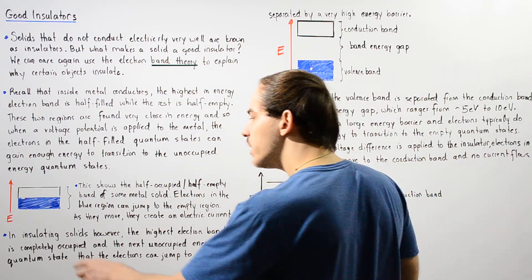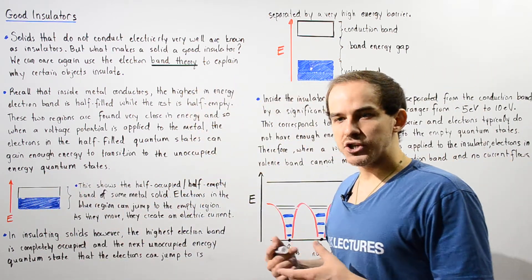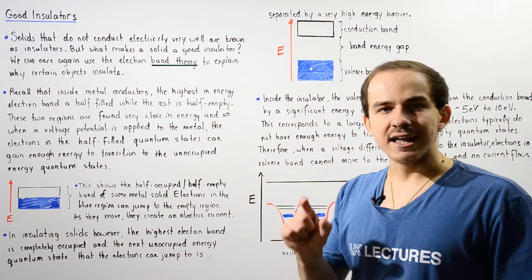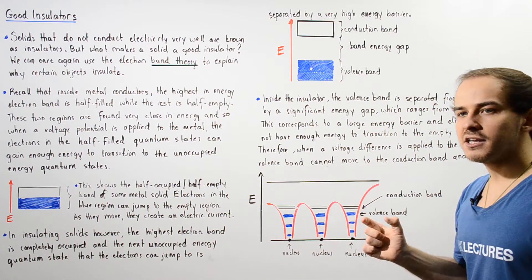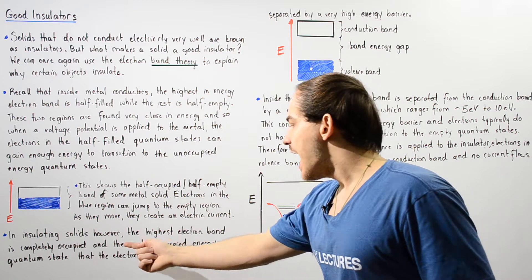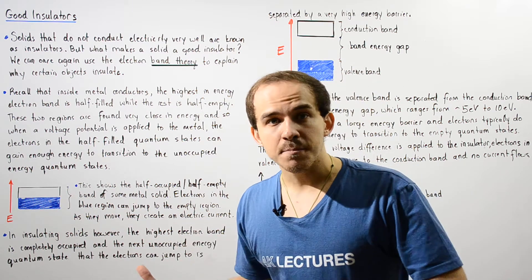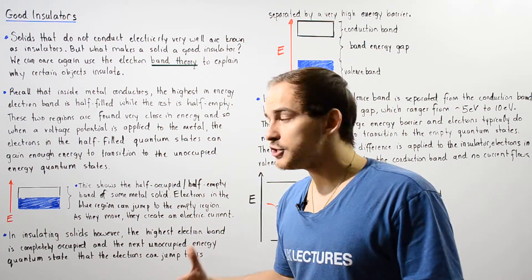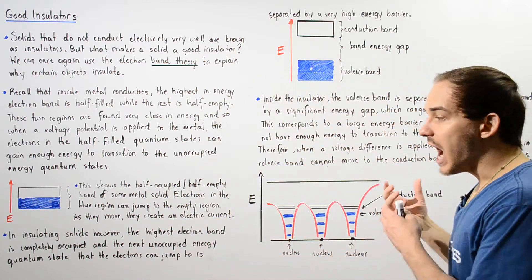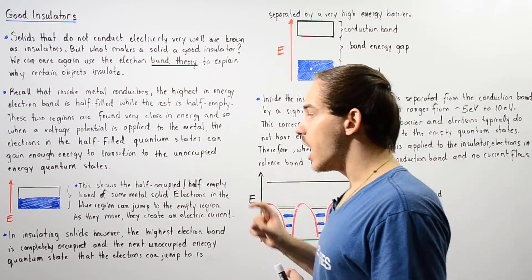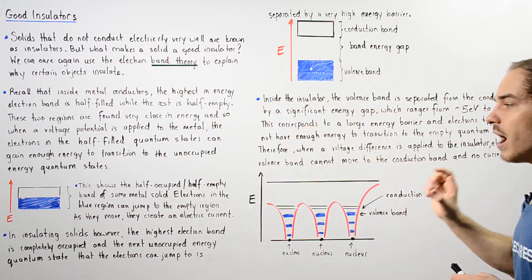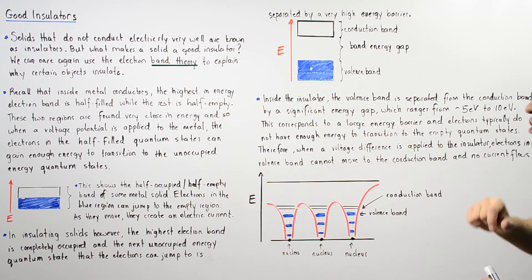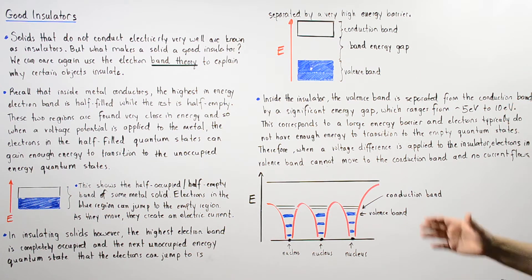Now, in insulating objects, the highest electron band is completely occupied with electrons. And the next unoccupied energy band — the next unoccupied quantum state of our atom — is separated by a very large energy barrier known as the band energy barrier.